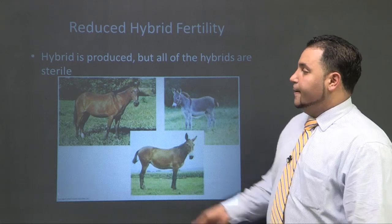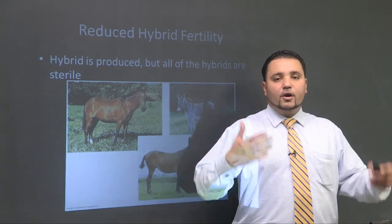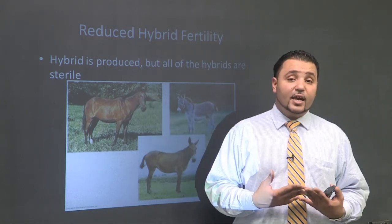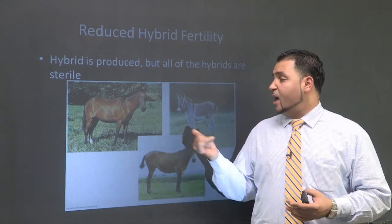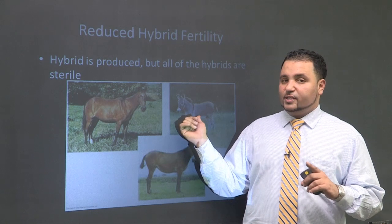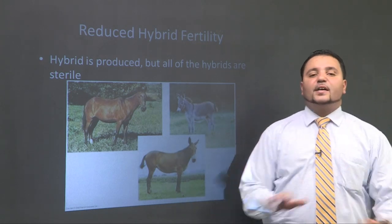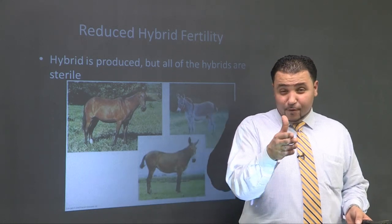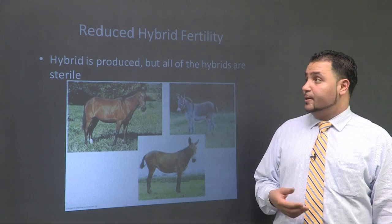Another post-zygotic barrier is reduced hybrid fertility. Put a horse and a donkey together and you get a mule. However, all mules are sterile — they can't reproduce. Every time you need to make a new mule, you have to bring another horse and donkey together. The mule is actually great because you get the best of both worlds: the donkey is smart and very strong but lazy, while the horse is a hard worker. You get the hardworking ethic of one and the strength and smarts of the other. But they are not a new species — they're just considered hybrids.